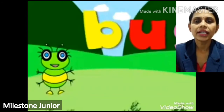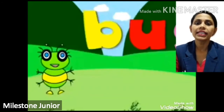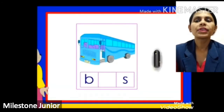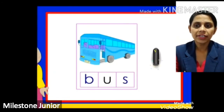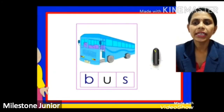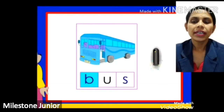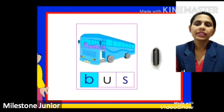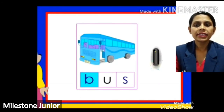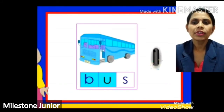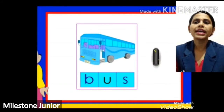Now the next word: fill in vowel U and start reading from B. After that U, and the last letter is S. So B, U, S — BUS.